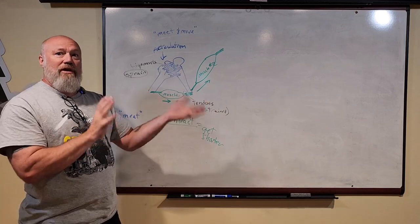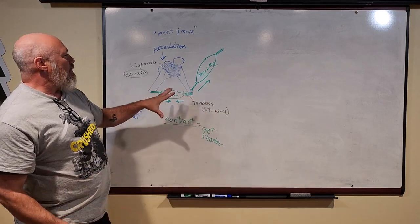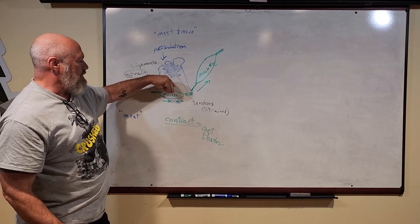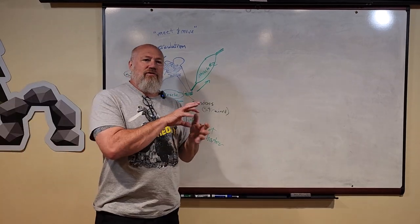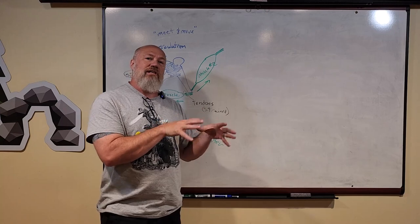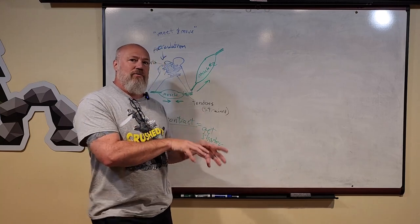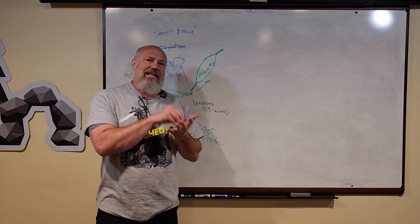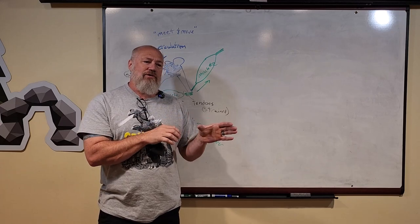Now what makes them get smaller or contract? Inside there's a series of little interconnections between your nerve and the muscle, the meat. When a little electrical signal gets there, it tells the muscle to get shorter.